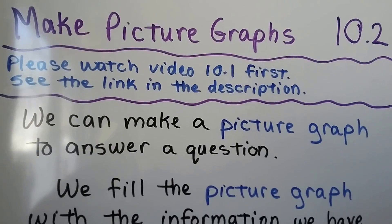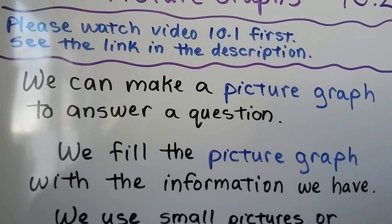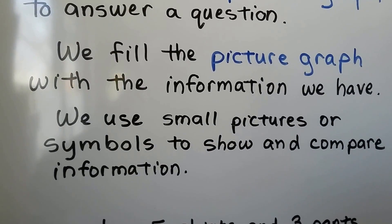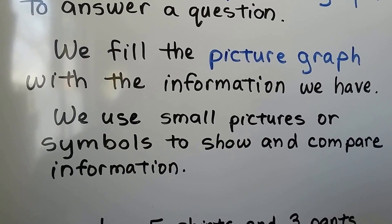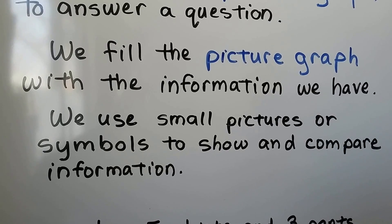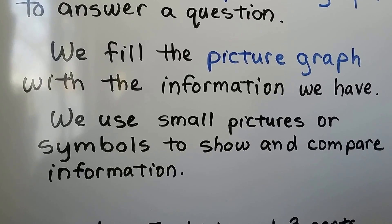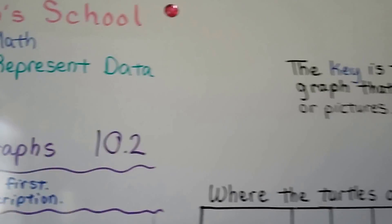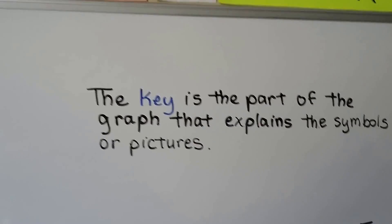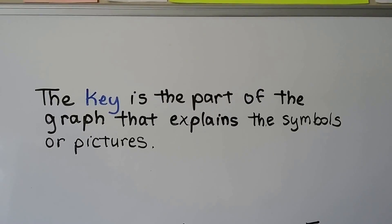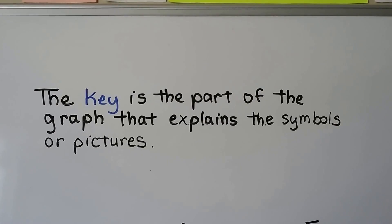We can make a picture graph to answer a question. We fill the picture graph with the information we have, and we use small pictures or symbols to show and compare information. We learned in the last video there's a thing called a key, and the key is the part of the graph that explains the symbols or pictures.